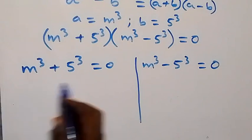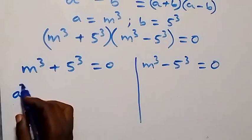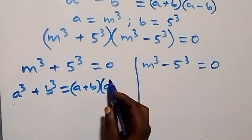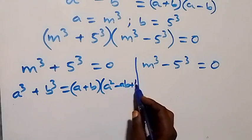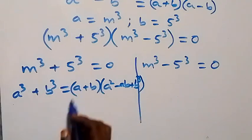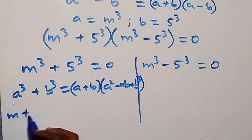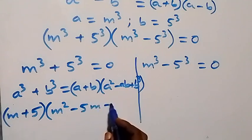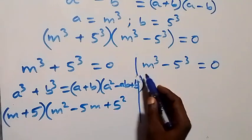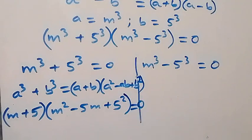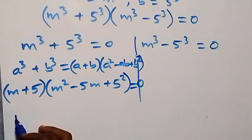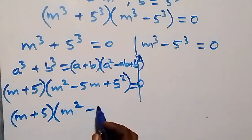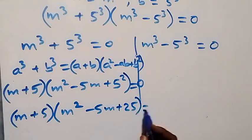When we solve the first case, this follows the sum of two cubes: a cubed plus b cubed is the same as a plus b, into bracket, times a squared minus ab plus b squared. Applying this, we get m plus 5, times m squared minus 5m plus 5 squared, which is m squared minus 5m plus 25, equals to 0.